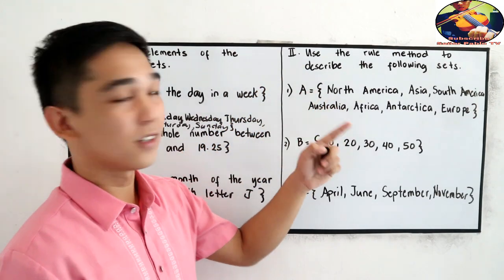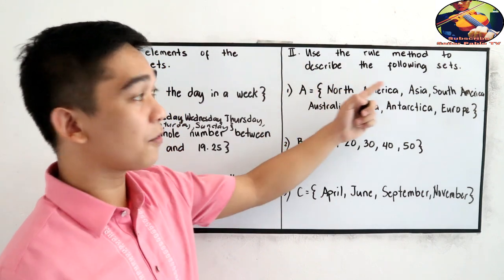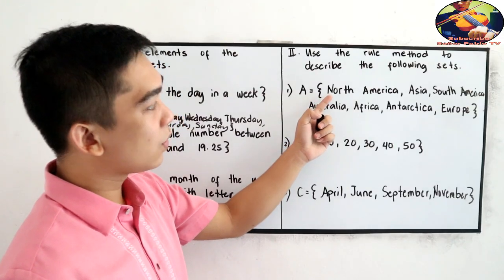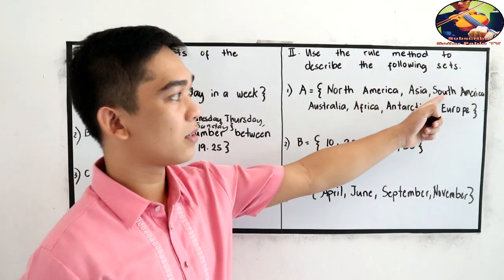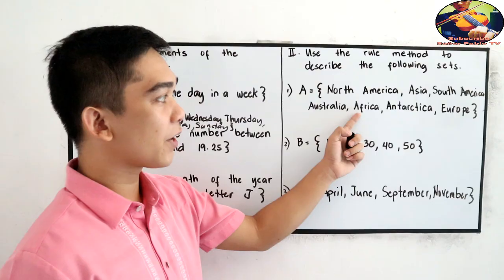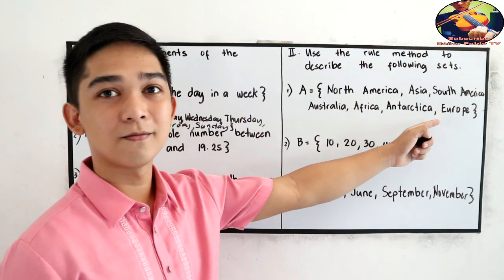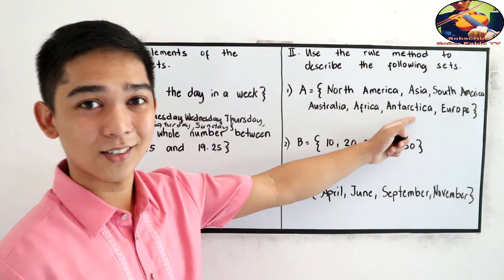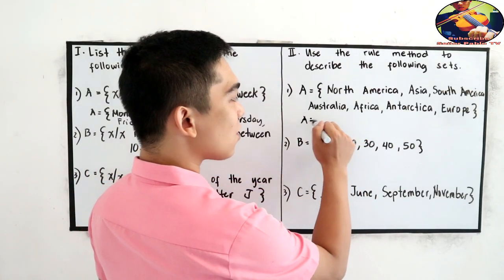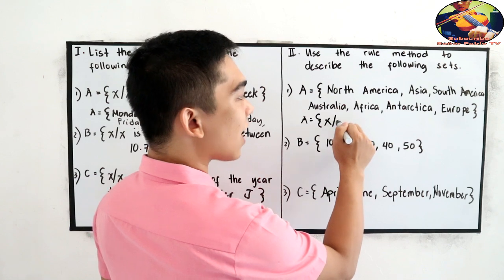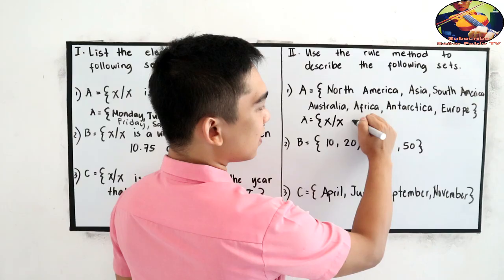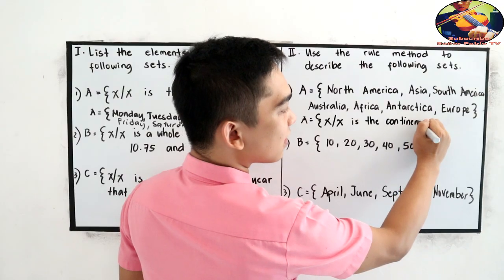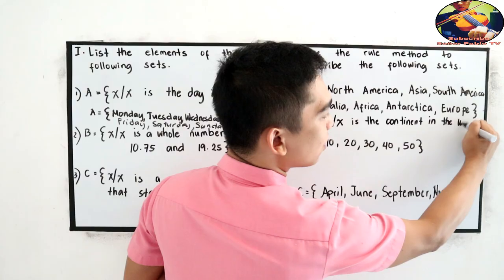For test 2, use the rule method to describe the following sets. Number 1: A is equal to {North America, Asia, South America, Australia, Africa, Antarctica, Europe}. We know those are the 7 continents. So A is equal to x such that x is a continent in the world.